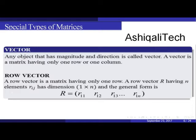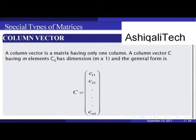The general form of a row vector is r = [r11, r12, r13, ..., r1n]. A column vector is a matrix having only one column. A column vector c having m elements c(i,j) has dimension m×1, and the general form is c = [c11, c21, ..., cm1].